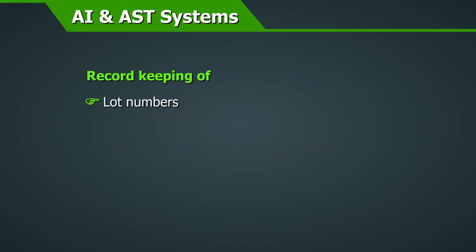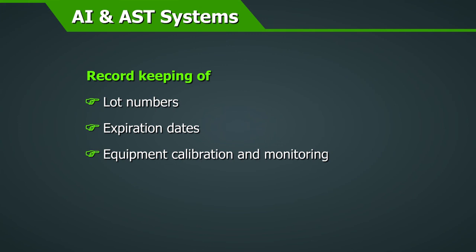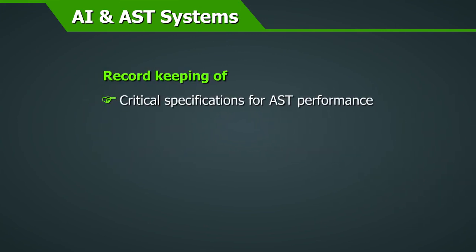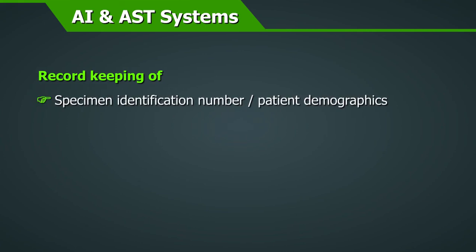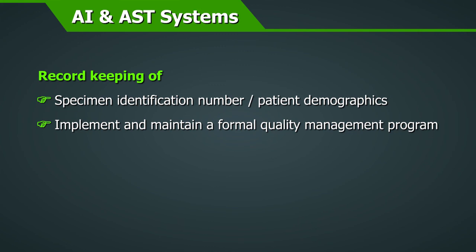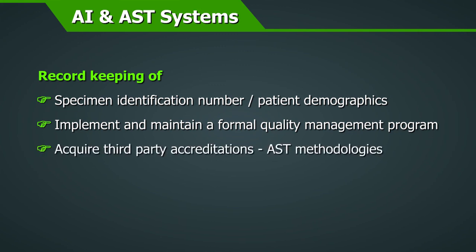Record keeping should include: lot numbers of all appropriate materials and reagents, expiration dates of all appropriate materials and reagents, equipment calibration and monitoring, critical specifications for AST performance such as reference results, time, temperatures, and specimen identification number or patient demographics. Implement and maintain a formal quality management program and acquire a third-party accreditation that includes the AST methodologies to be used within the scope of that accreditation.